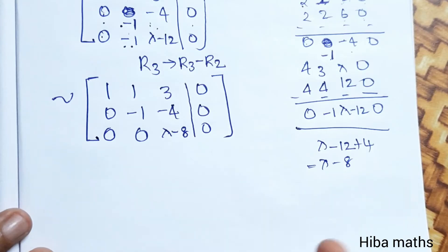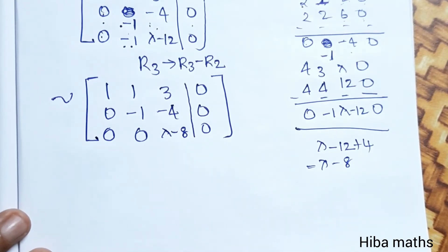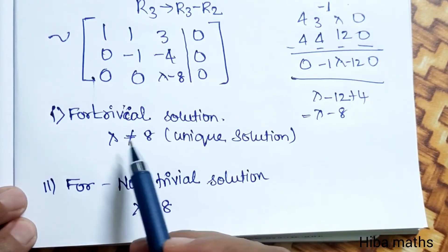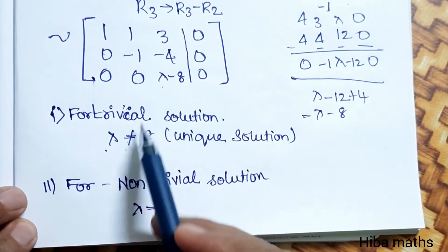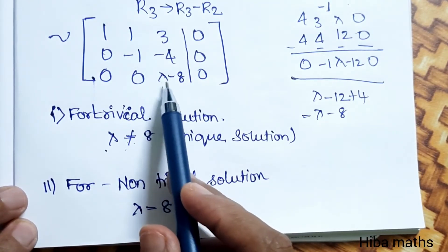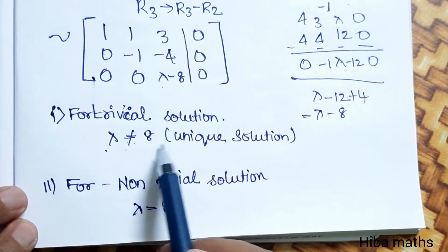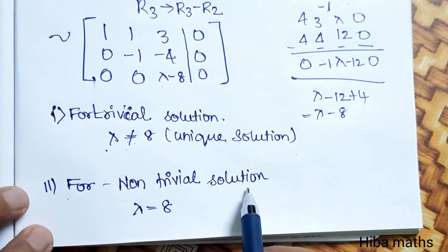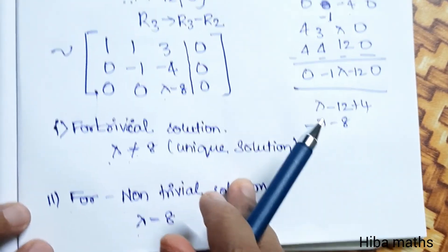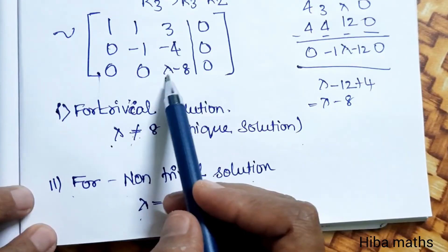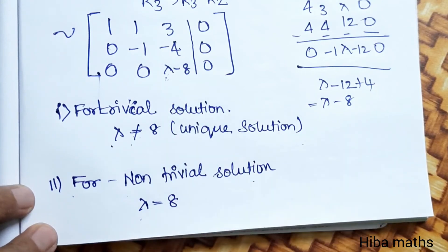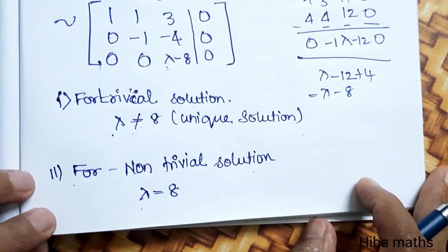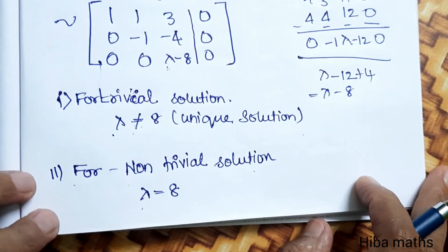So we have two cases. For a unique solution (trivial solution), lambda should not be equal to 8. For a non-trivial solution, lambda should be equal to 8, and z equals k, so we solve accordingly. Thank you so much for watching.